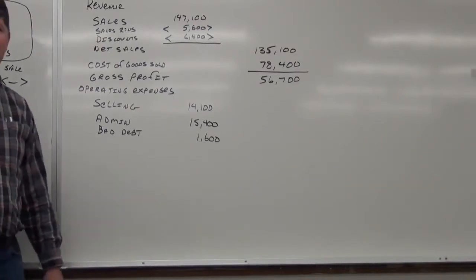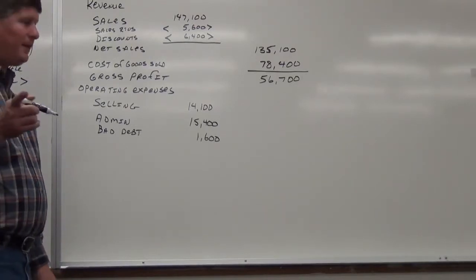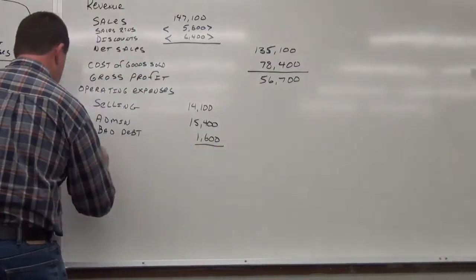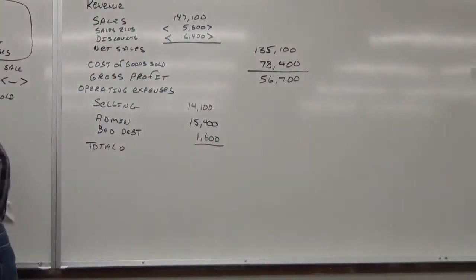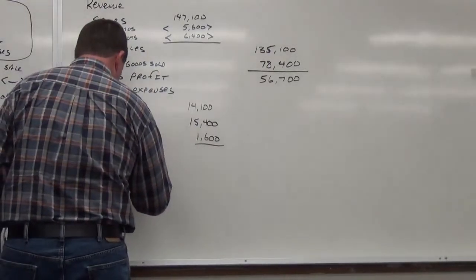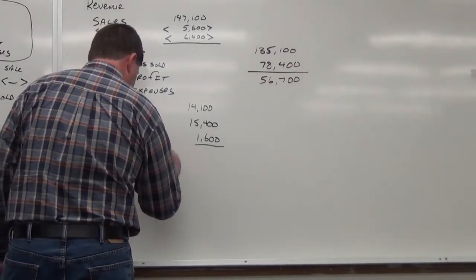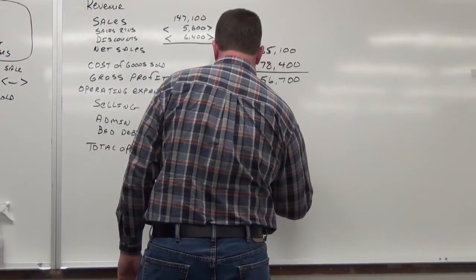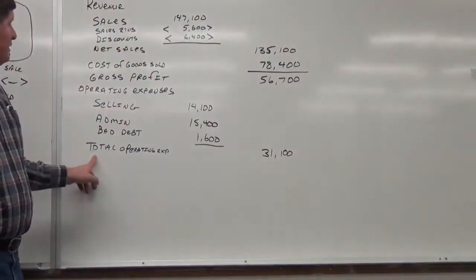Okay. What other expenses do we have? Bad debt. Go ahead. I was just going to ask that. Does it go there or does it go under other expenses below? Bad debt. Bad debt. Bad debt is part of your cost of doing business. It's not extraordinary or anything like that. So, how much is our bad debt expense? $1,600. $1,600. Okay.